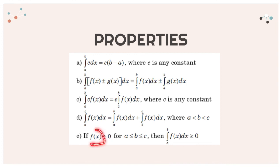The next property is if f(x) is strictly positive for a less than or equal to b less than or equal to c, then the definite integral from a to b is greater than or equal to zero.